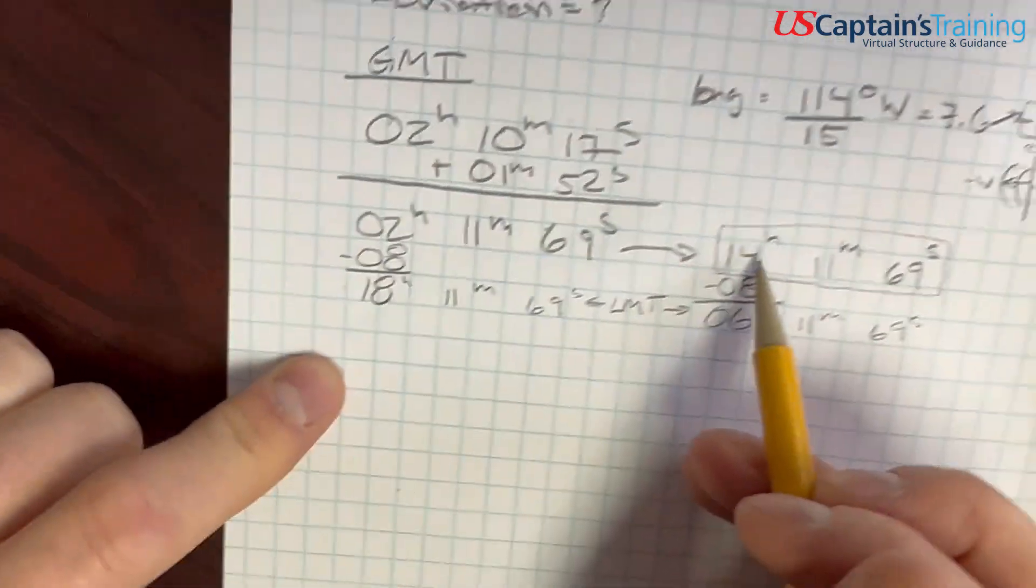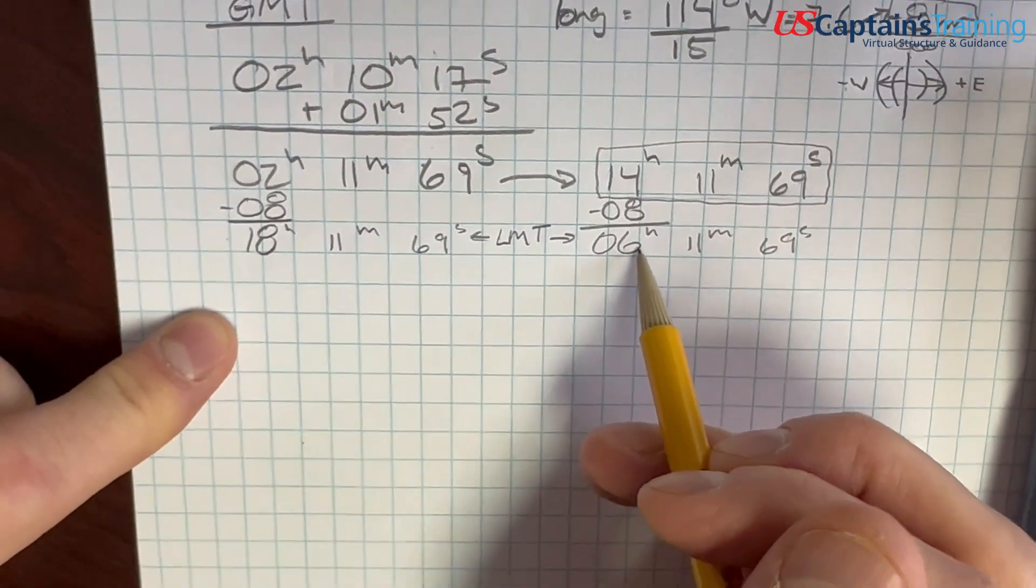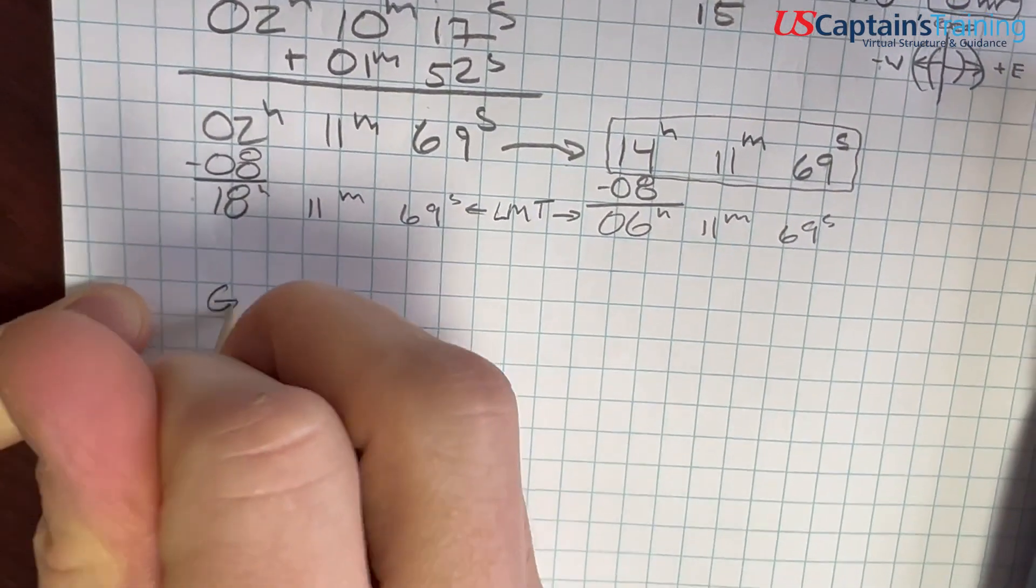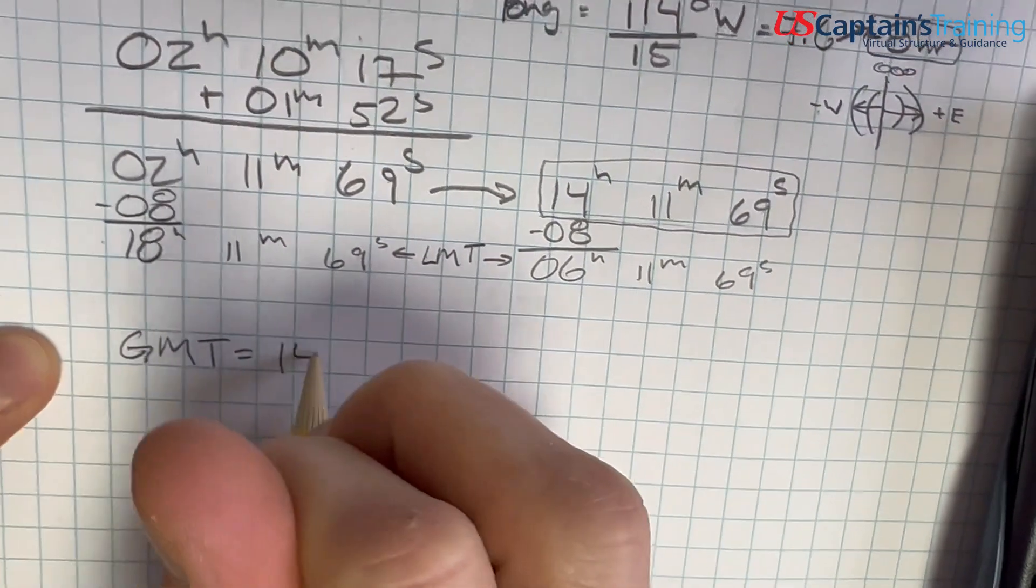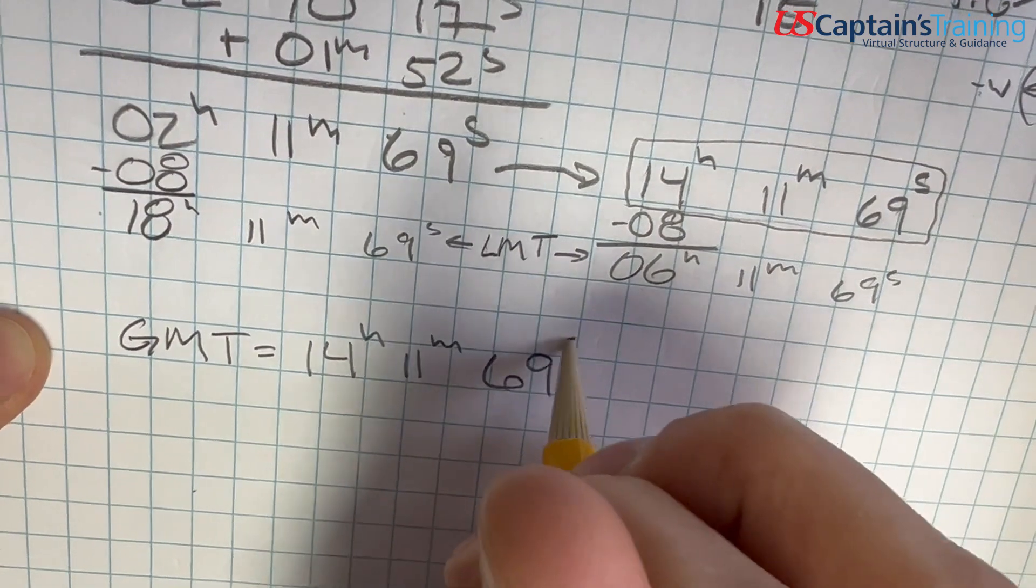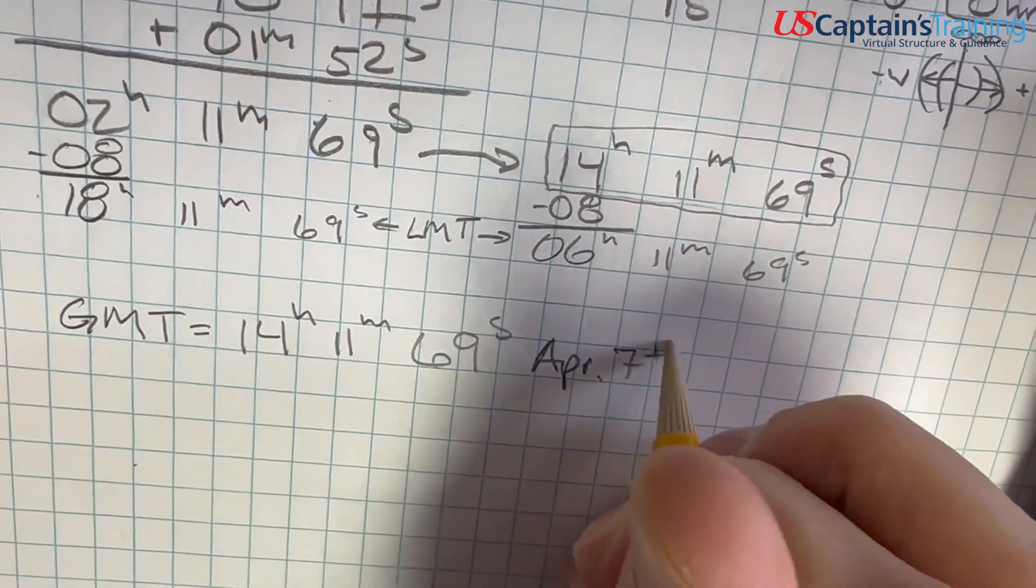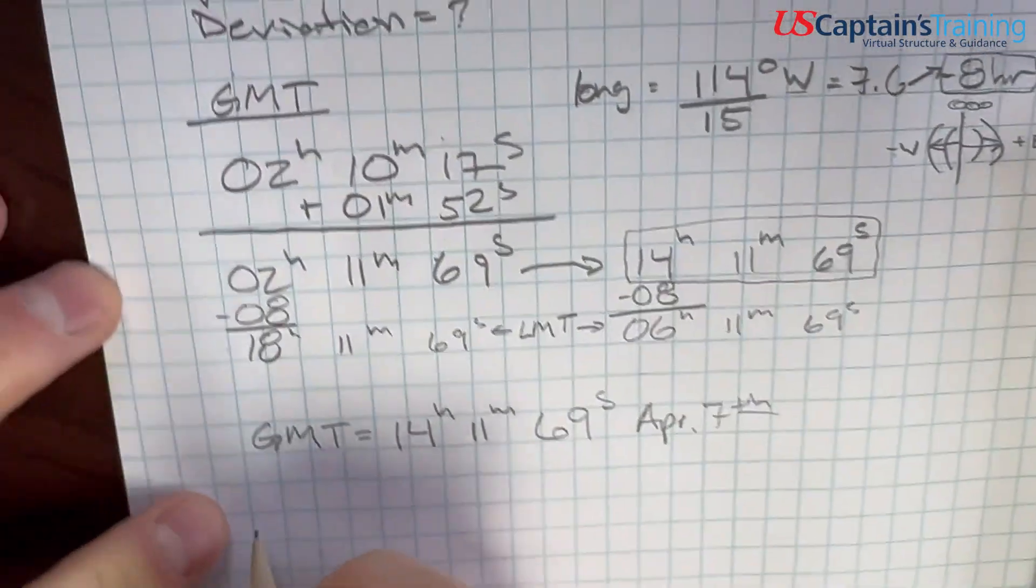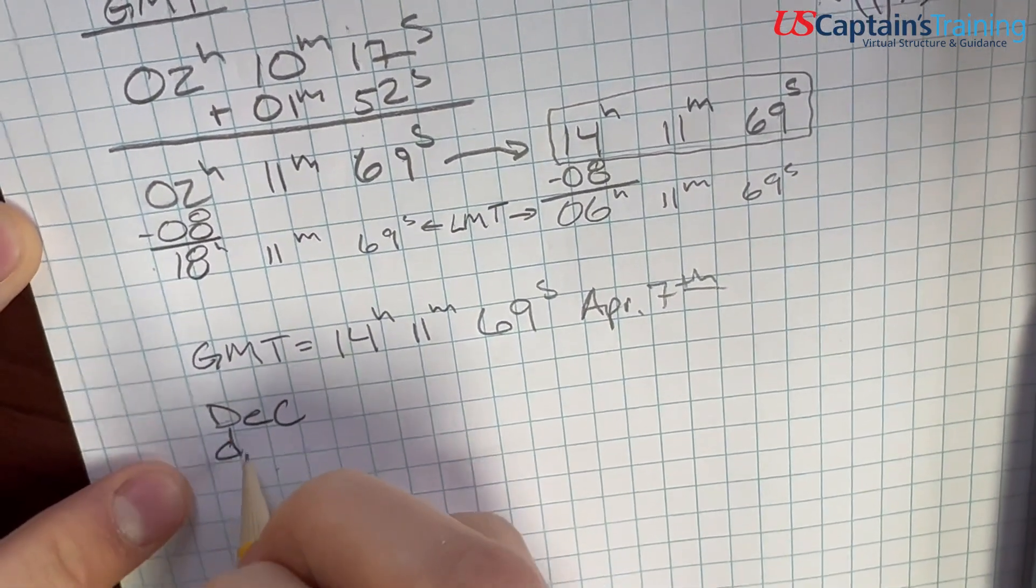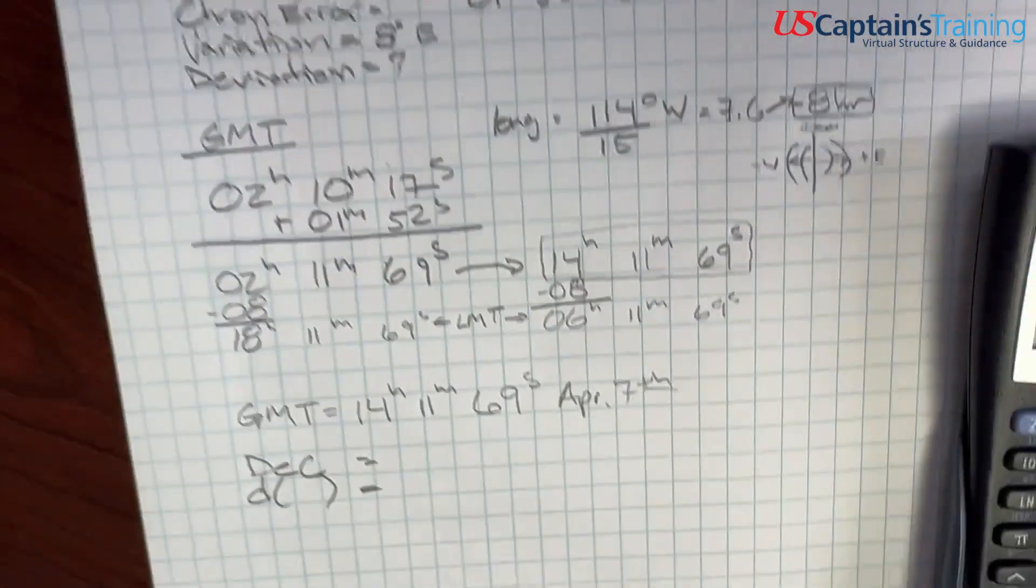So are we PM or AM? Let's look. Sun bearing 76 degrees PSC, that is in the east, which means the sun is rising when we took the bearing, which means it's AM. Which one is AM local mean time? Here is 6 AM, which means we are working with 14:11:69 for our GMT. And same day, when we subtracted 8 we stayed in the same day. So GMT is equal to 14 hours 11 minutes 69 seconds on April 7th. And that allows us to get the declination.